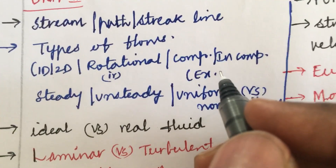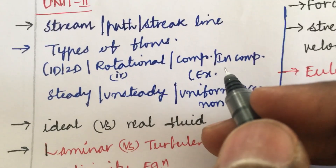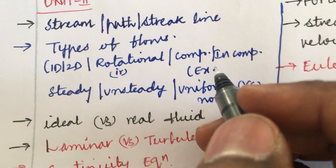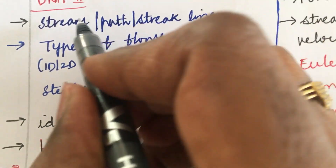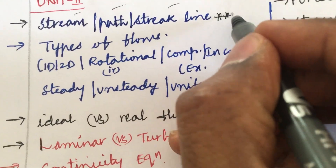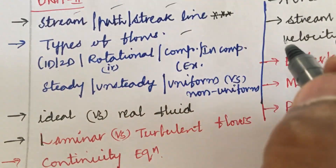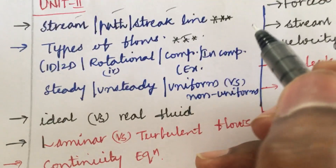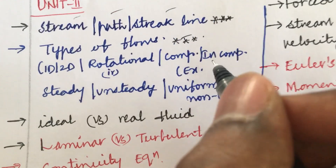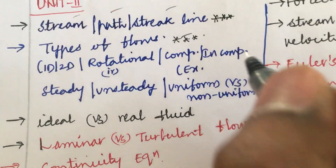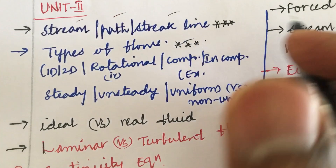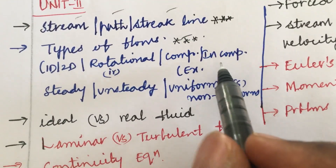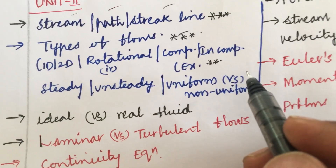Moving to Unit 2 — students working on Unit 1 should also work out Unit 2, as it is short in structure. You need the fundamentals of Units 1 and 2 before taking Unit 3. Define the terms streamline, pathline, and streakline — this is a topmost question. Types of flows is a very important question, in either long or short form. If 2 to 3 differences are asked, it may be a short question. List out different types of fluid flows: 1D, 2D, rotational, irrotational, compressible, incompressible — along with their examples, written neatly in point-wise format.